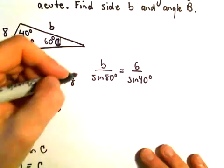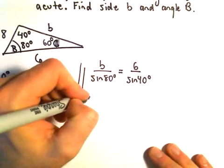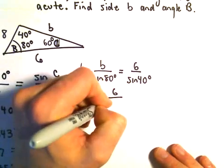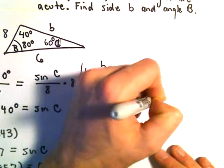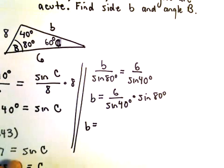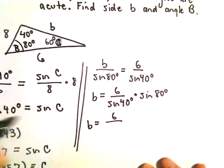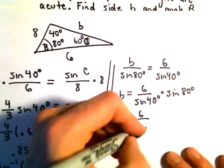And now, simply, all we have to do is solve for b. We could multiply both sides by sine of 80 degrees. So we would get 6 over sine of 40 degrees times sine of 80 degrees. And now it's just a matter of plugging this into the calculator. So we would have 6 over, we already said sine of 40 degrees was 0.643. So I'll make use of that.